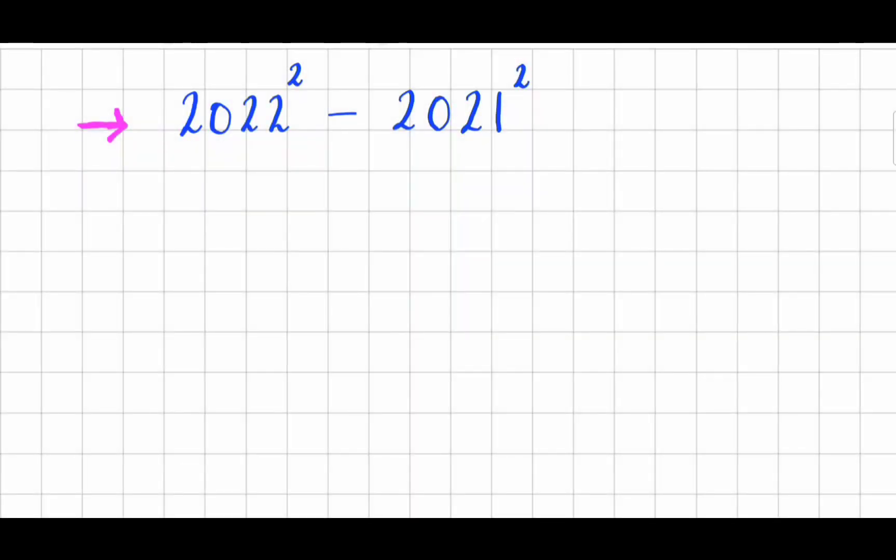Extend the shortcut we just used to calculate the value of this expression efficiently. If you apply the shortcut correctly, you won't need to calculate the value of either of the squares in the expression.